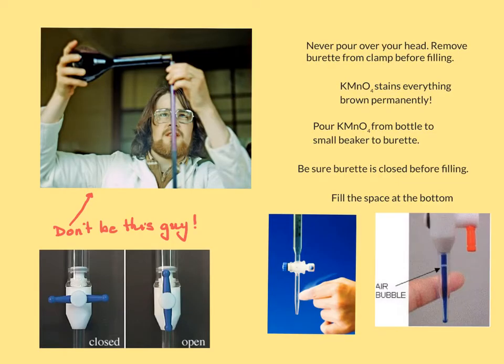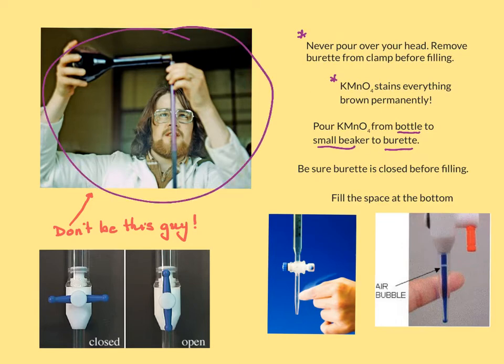And then you're going to be given a burette. A burette is, we'll show you a burette. I think you've seen one. We're going to need to fill our burette with our potassium permanganate solution. So a few things. Never pour over your head. Always remove the burette from the clamp before you fill it. KMnO4 will stain everything that you do brown permanently. Anything it gets on closed, they're gone. You're going to pour your KMnO4 from the bottle to a small beaker into the burette. So don't be this guy. This guy is pouring a solution over his head. He's trying to pour it from a big, huge bottle into a burette. And he's about to get all of the things he wears stained brown.